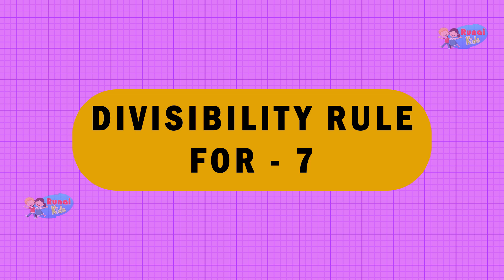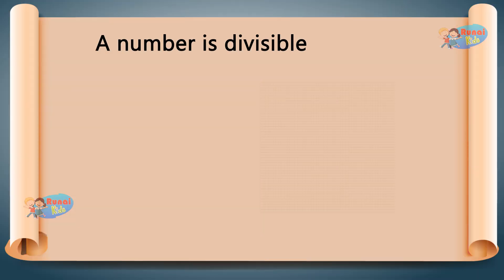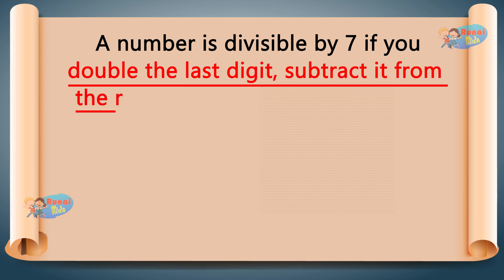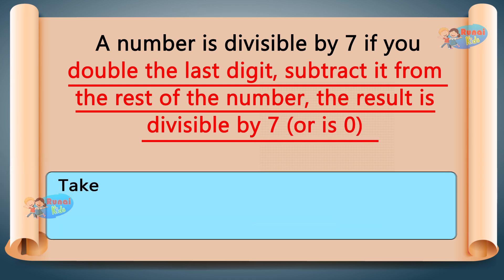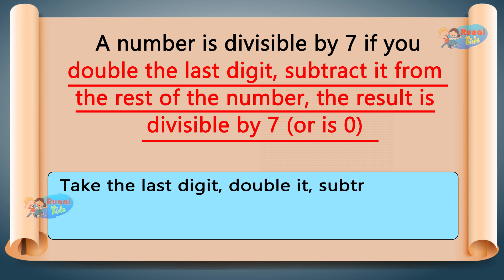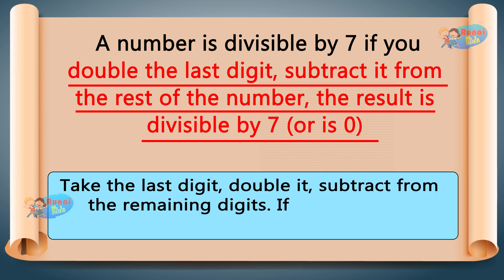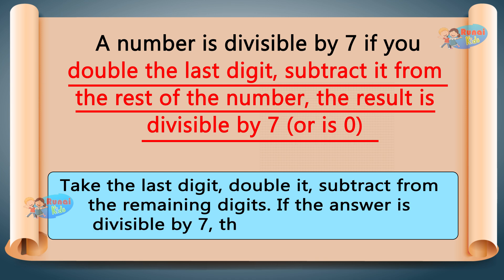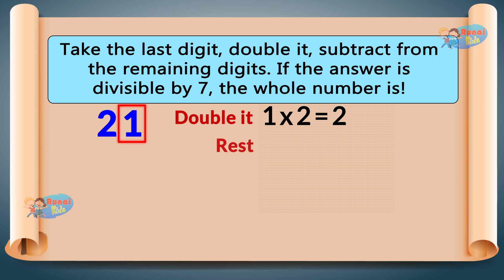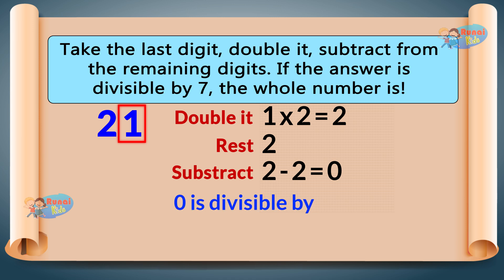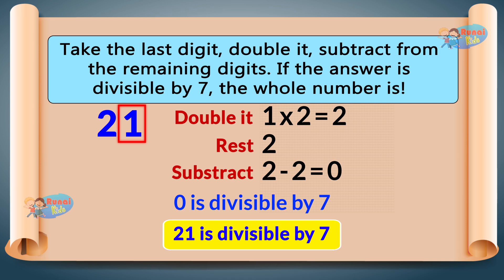Divisibility Rule for 7: A number is divisible by 7 if you double the last digit, subtract it from the rest of the number, and the result is divisible by 7 or is 0. Take the last digit, double it, subtract from the remaining digits. If the answer is divisible by 7, the whole number is. Example: 21 — last digit is 1, double it: 1 times 2 equals 2. Rest is 2. Subtract: 2 minus 2 equals 0. Since 0 is divisible by 7, 21 is divisible by 7. 21 divided by 7 equals 3.